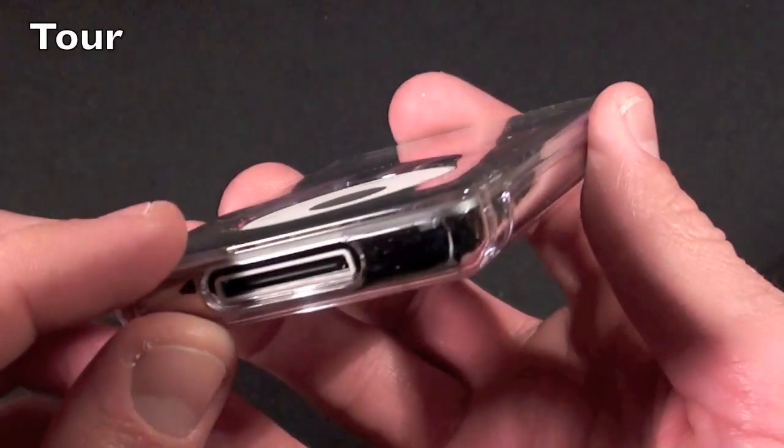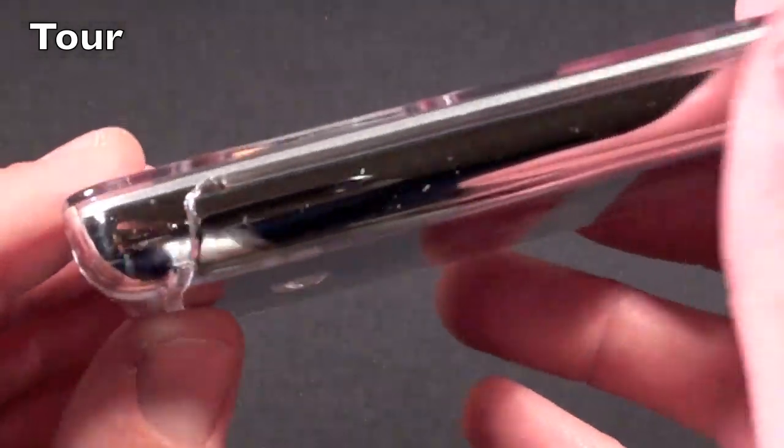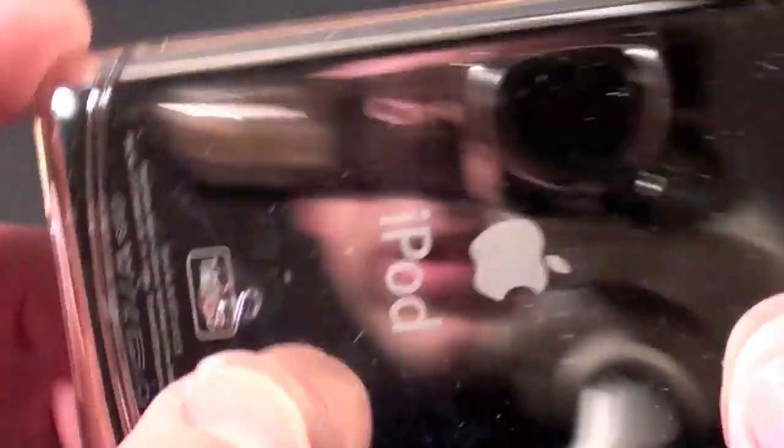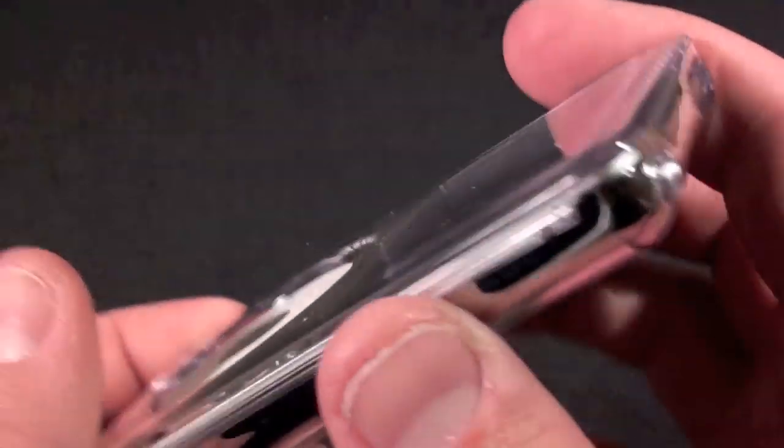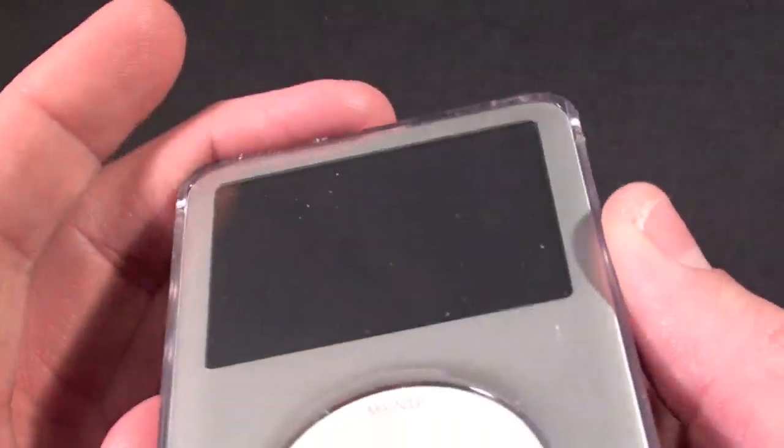So there we have it. We have a very clear, low profile case. It doesn't really show itself too much. You do see the SwitchEasy logo on the back. The rest of it is pretty well exposed, and that's what I wanted. I wanted a case that didn't really hide the look of the iPod at all.